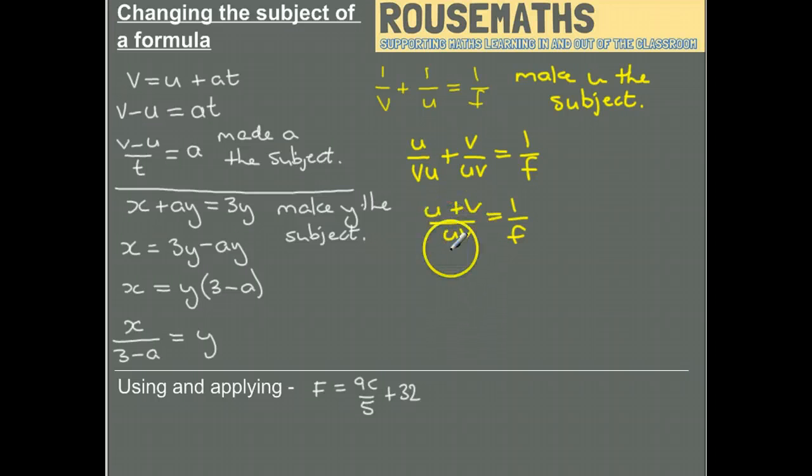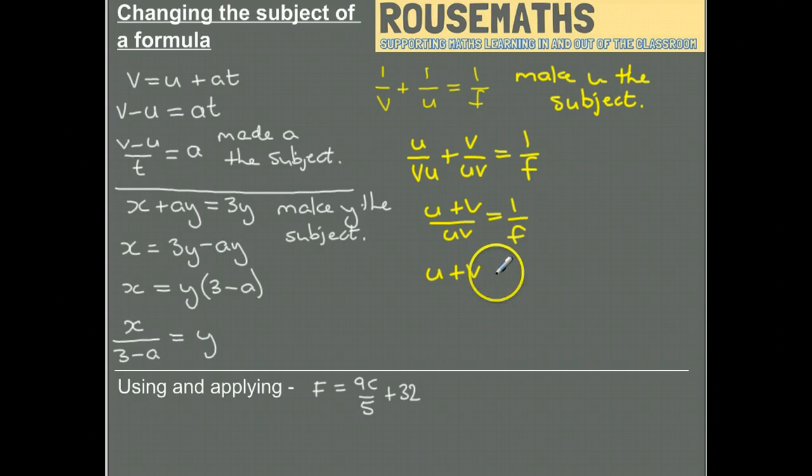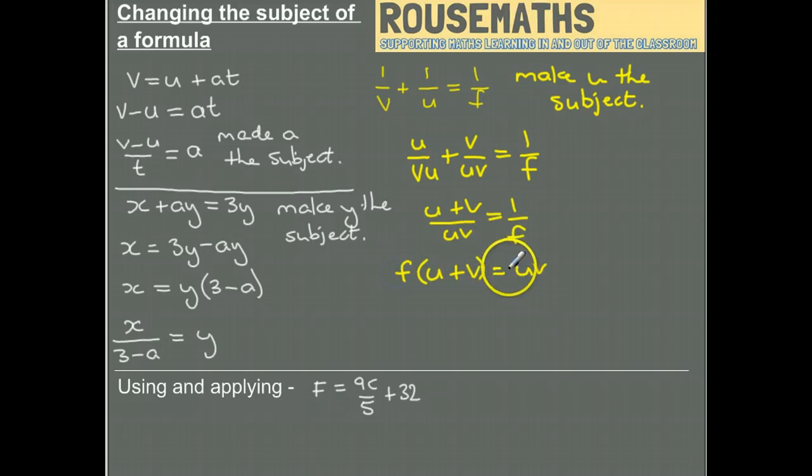So I've multiplied by both the denominators, which means the F has ended up being multiplied by this numerator here, and the uv by this numerator here.